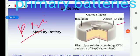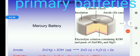Cathode is made up of steel where potassium hydroxide and paste of zinc hydroxide and HgO are taken as cathode.